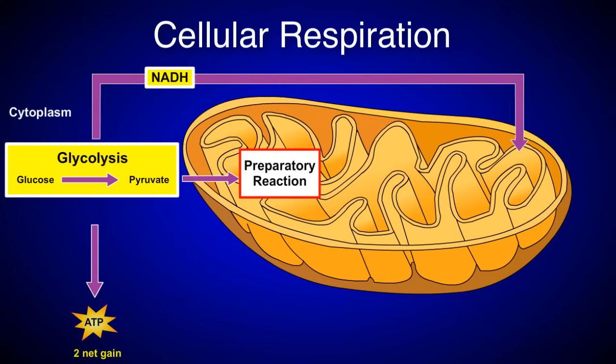Stage 2 is the preparatory reaction. During this stage, the pyruvates from glycolysis move into the mitochondria, where they are converted into acetyl CoA. During this conversion process, more NADH is produced, and carbon dioxide is released.